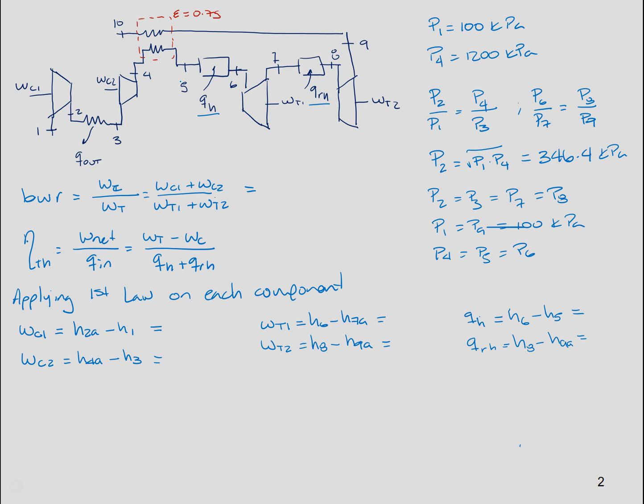And in order to find state 5, we'll use the definition of effectiveness. Effectiveness can be computed as actual heat h5 minus h4a divided by the maximum heat h9a minus h4a, and this value is 0.75. From here we can get the value of h5. So we already solved this, this is the analysis. Next we're going to find out each state.